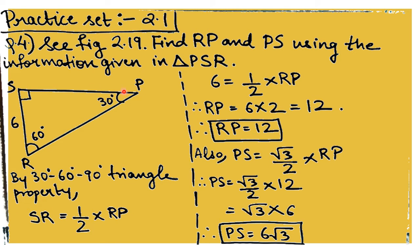Next, we find PS. The side opposite to 60 degrees equals (√3/2) × hypotenuse. So PS = (√3/2) × RP = (√3/2) × 12 = 6√3. Again a very simple application of the 30-60-90 theorem.